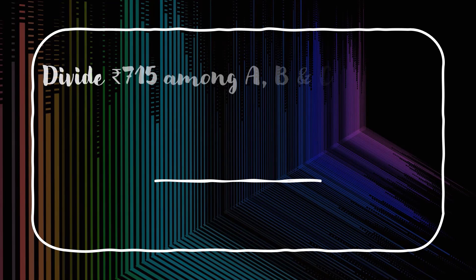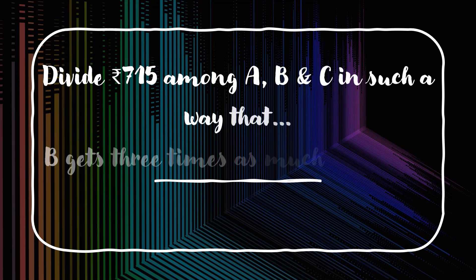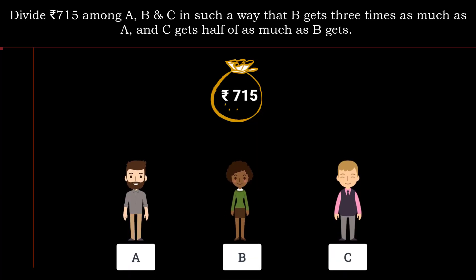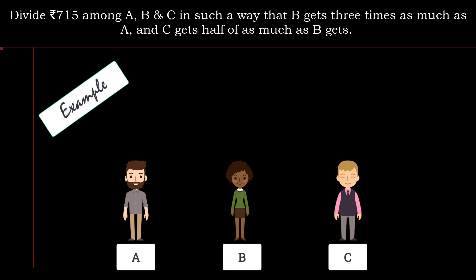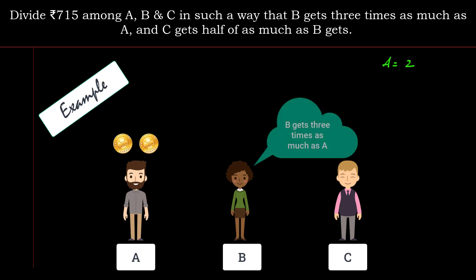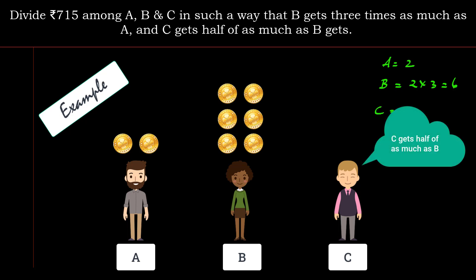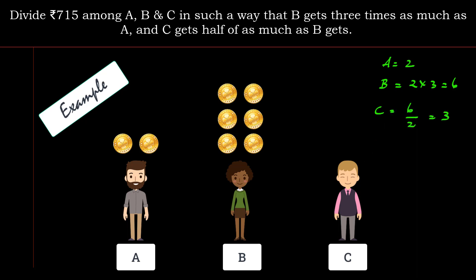Problem 2: Divide Rs. 715 among A, B, and C such that B gets three times as much as A, and C gets half as much as B. The ratio is not given directly — we need to frame it. For example, if A gets 2, then B gets 2 × 3 = 6, and C gets half of 6 = 3. This is just for understanding.